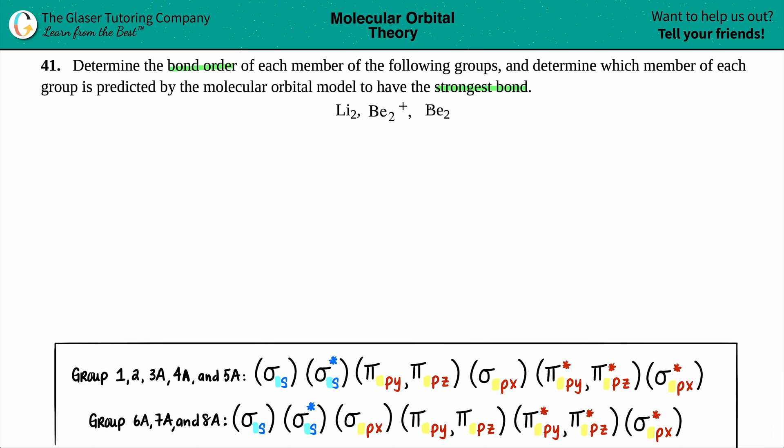Before we get into the molecular orbital configurations, we basically have to find out the number of valence electrons. You might be asking why do we have to do that, they wanted bond order. Just know that the easiest way to find bond order is to know how many bonding and antibonding electrons there are, and that comes from these configurations which are based off of valence electrons.